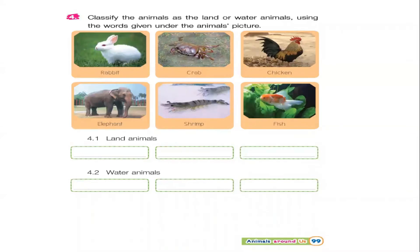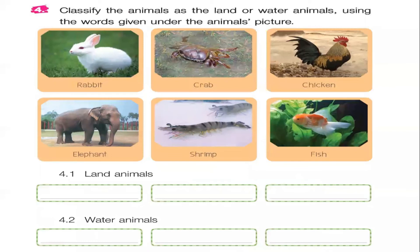Good job! And I have activities for you today. Could you open your book to page number 99? I want you to classify the animals as land or water animals. โดยเด็กๆ จะต้องจัดประเภคของ animals นะคะ โดยแบ่งออกเป็นสองชนิดเท่านั้นค่ะ คือ land animals แล้วก็ water animals. โดยเด็กๆ จะต้อง use the words คำชื่อ animal ที่ให้มาด้านล่างค่ะ ติมลงไปในช่องว่างนะคะ.